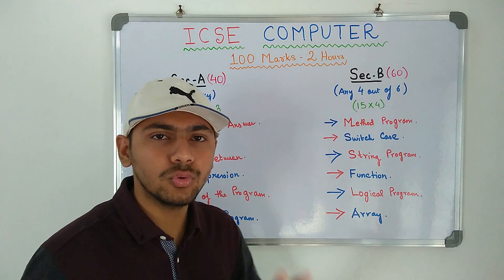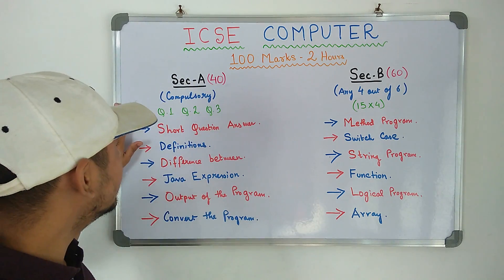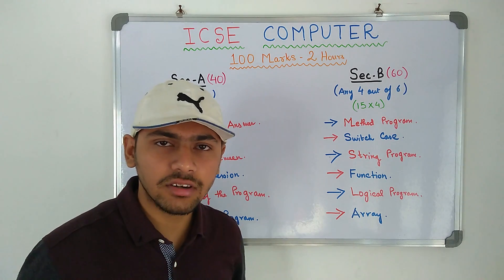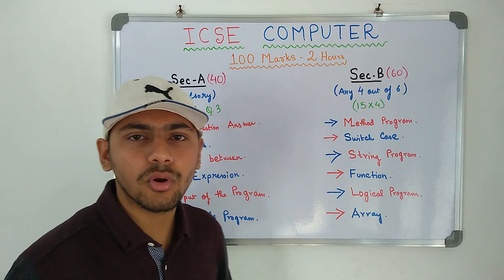The question paper is divided in 2 sections. Section A short question answers based on Java and Section B programs based on Java.